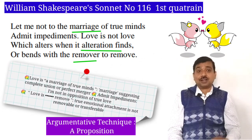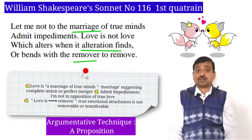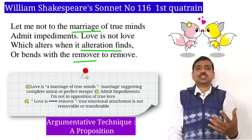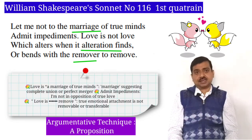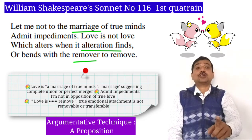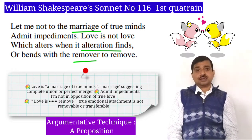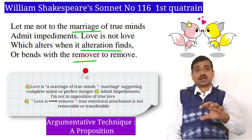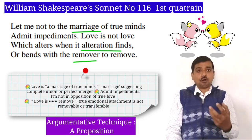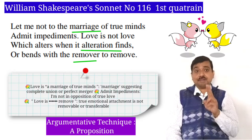These first few lines at once add our minds to the central topic or thesis. In order to establish this central thesis of the permanency of love, Shakespeare uses a specifically argumentative technique. First, he gives a proposition: 'Let me not to the marriage of true minds admit impediments.' Within his initial proposition, a definition of love comes out — love is a marriage of true minds. The word 'marriage' here suggests a complete union, a perfect merger. Shakespeare proceeds to argue and establish the validity of his proposition.